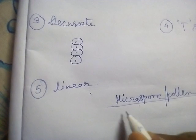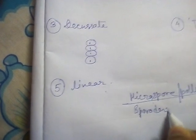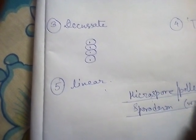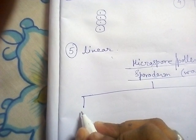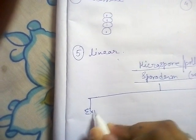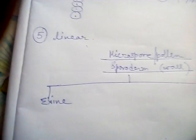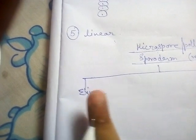The sporoderm can be classified into two categories: the first is exine and the second is entine. The entine layer is a thin, delicate layer, and the exine is the very hard outer membrane of the microspore. The entine layer is also known as the pectocellulose membrane because entine is made up of both pectin and cellulose.